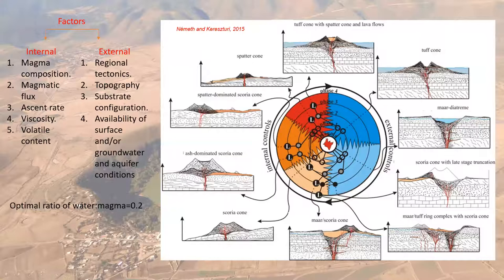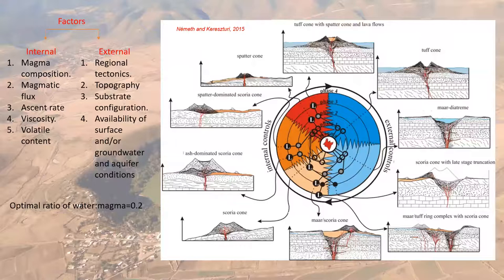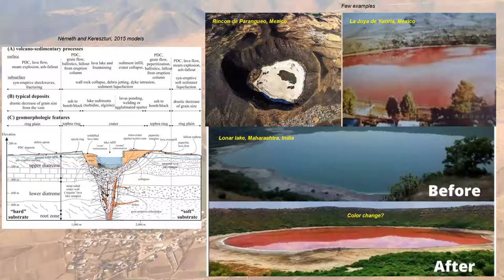These volcanoes are like bonsais — small but not easy to interpret. They are often complex: a volcano may begin as a maar-diatreme but end as a scoria cone because there was insufficient water, or vice versa — beginning as a scoria cone and turning into a maar-diatreme. To understand the evolution of these volcanoes, we have to look at the deposits.